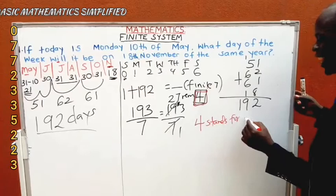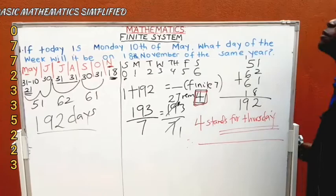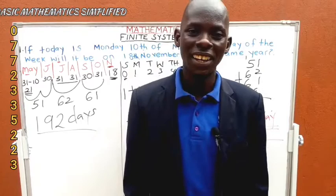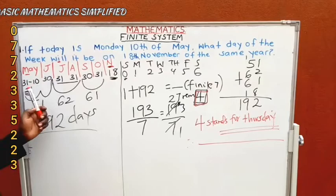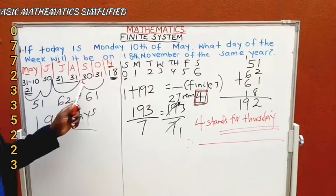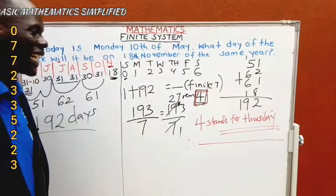Remainder 4 stands for the 4th day. Therefore, it will be a Thursday on the 18th of November of the same year. If today is Monday 10th of May, subtract the number of days remaining in May (31 minus 10 = 21), add the days of the middle months which cannot be skipped, and for the last month pick the date exactly. That gives 192 days total, and applying modulo 7 gives remainder 4, which is Thursday.